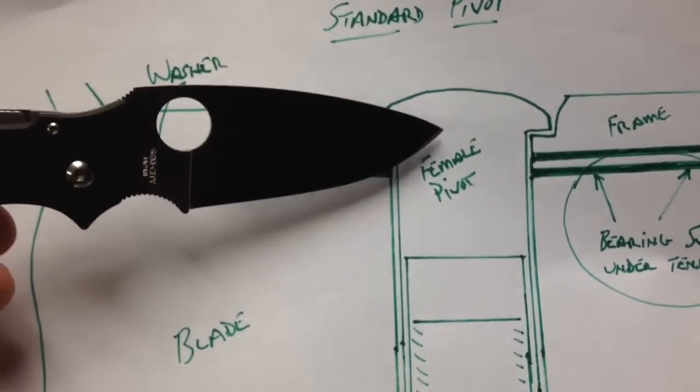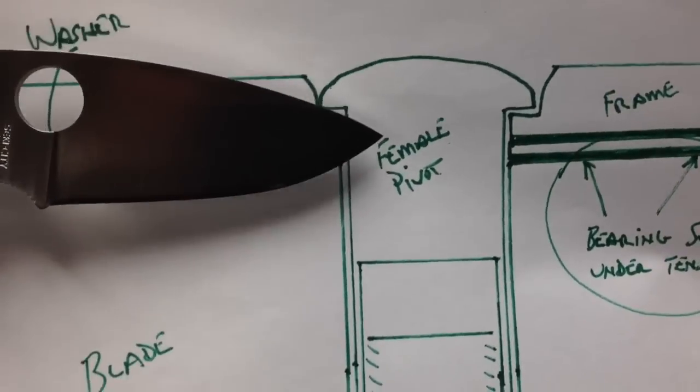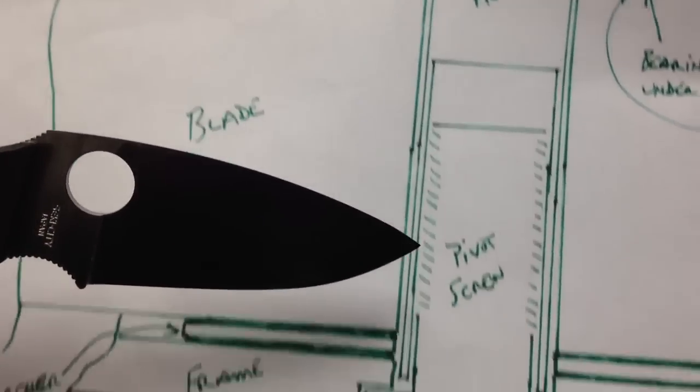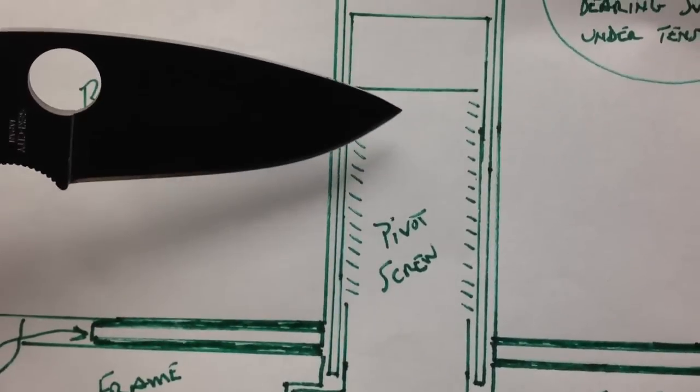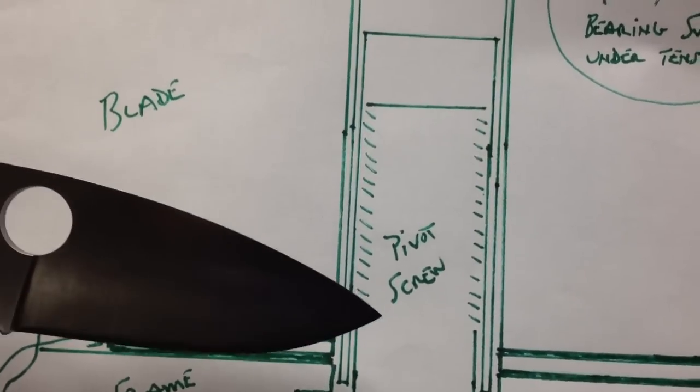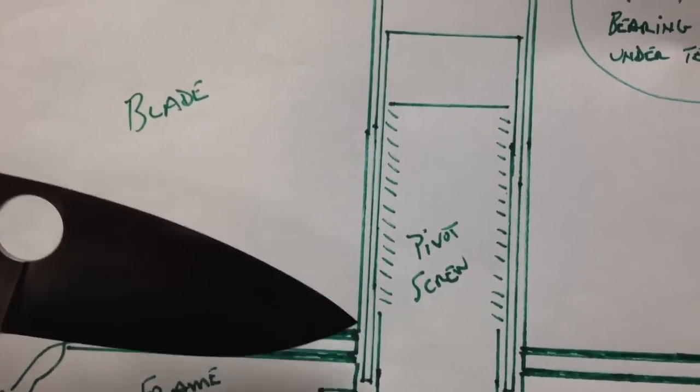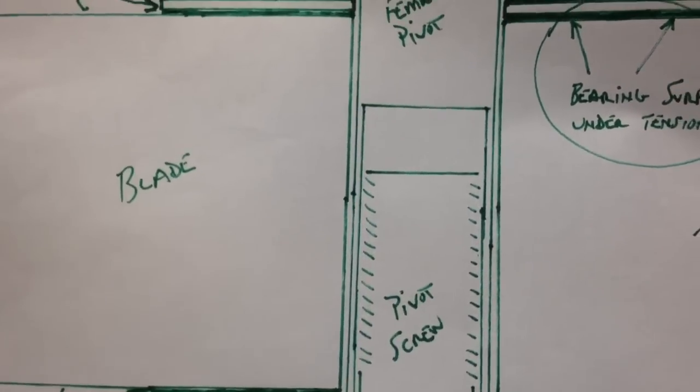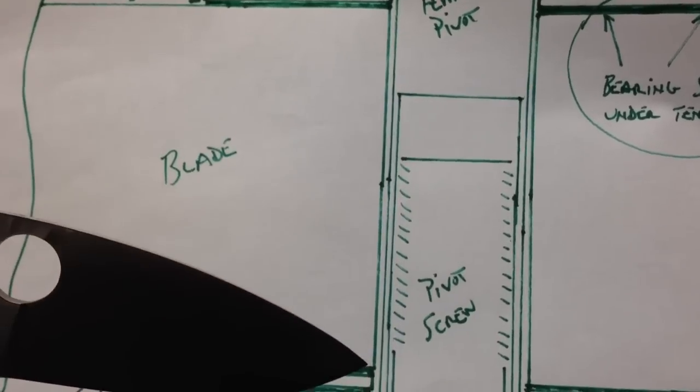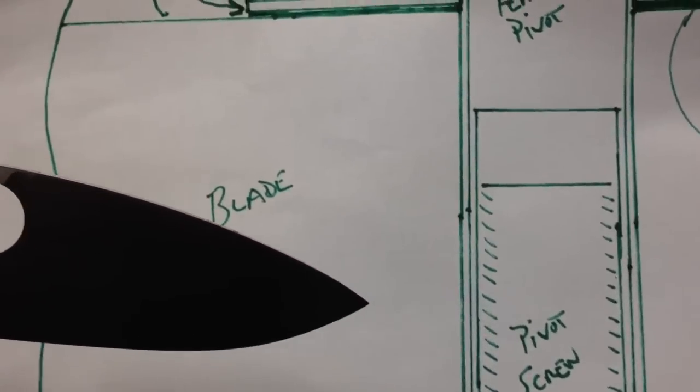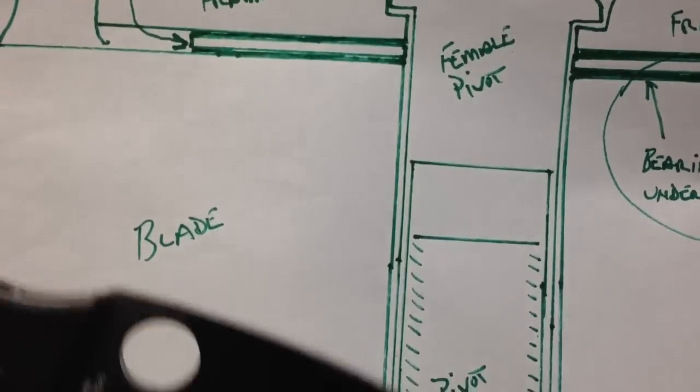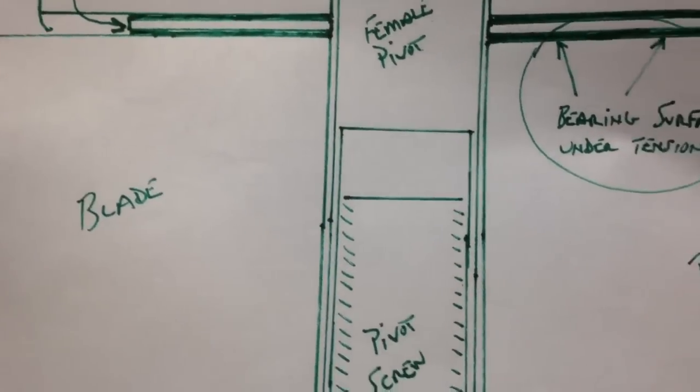Generally on one side of the knife we're going to have a female pivot which is essentially a socket and then on the other side a pivot screw that goes into the female end of the pivot. And this creates a machined pin right through the middle of the knife very closely fit and toleranced to the blade which of course is going to swing around the pivot.